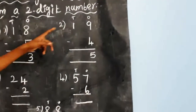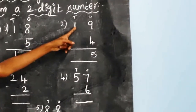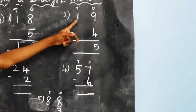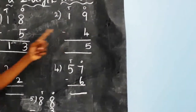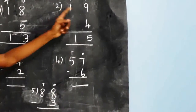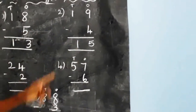Now we subtract the tens place. Here one will be there and there is no number on the other side, so we bring down the one. So nineteen minus four is fifteen.